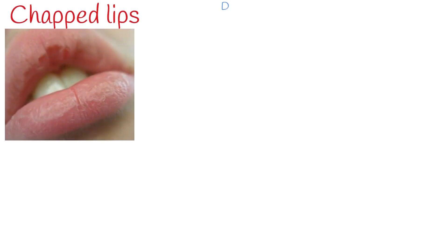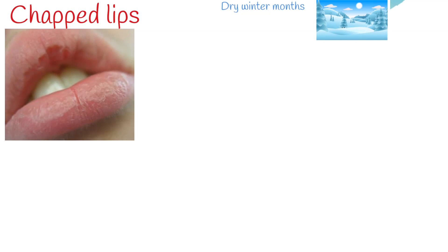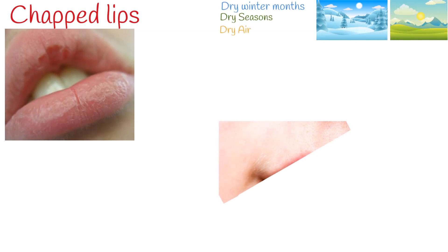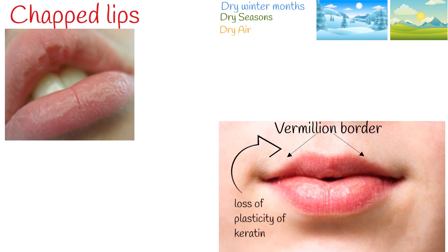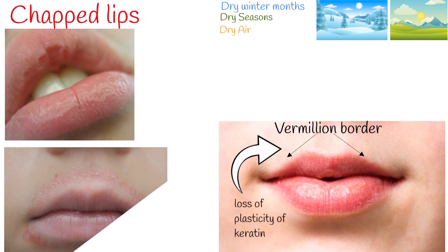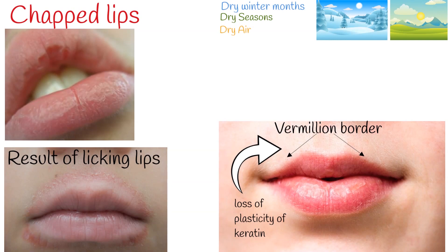Dry chapped lips are a common occurrence in the dry winter months, sometimes during summer in hot dry weathers. Dry air can cause loss of plasticity of keratin and vermilion, leading to sores and dry, scaly lips. Saliva contains digestive enzymes that can further break down the skin of the lips, so licking lips is no good idea.